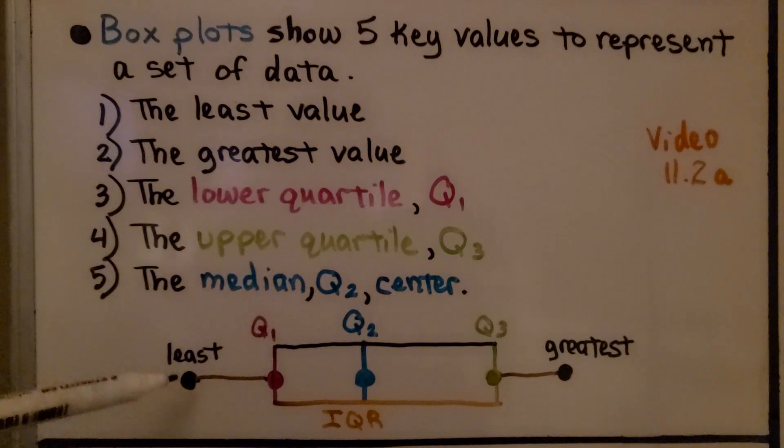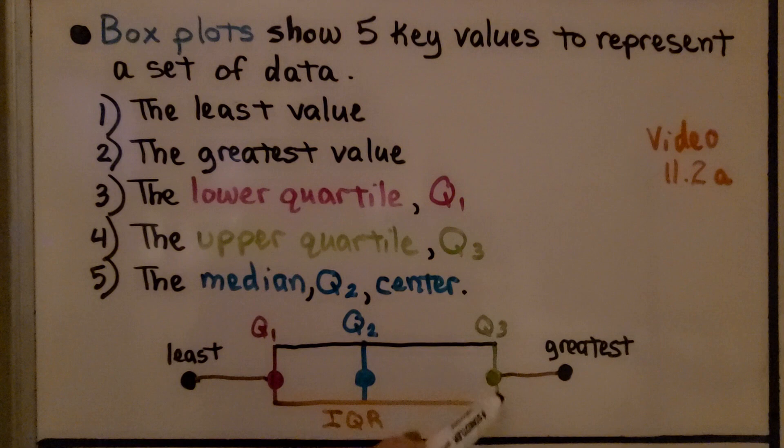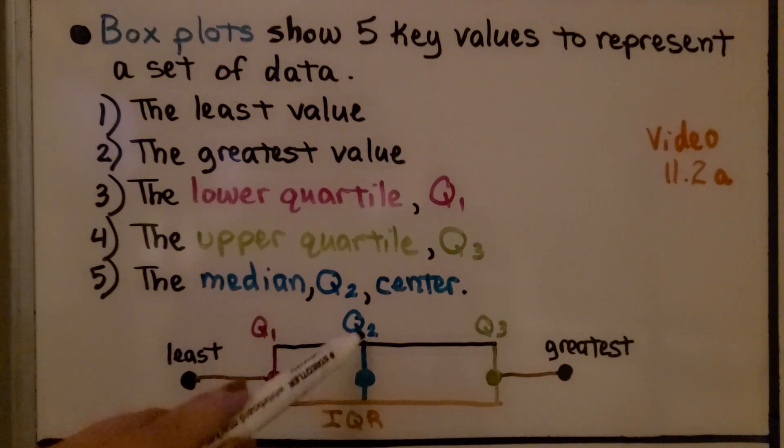It shows the least value, the greatest value, the lower quartile which is Q1 the first quartile, it shows the upper quartile which is Q3 the third quartile, and it shows the median that's Q2 the second quartile, that's the center. And the IQR, the interquartile range, is the length of the box.